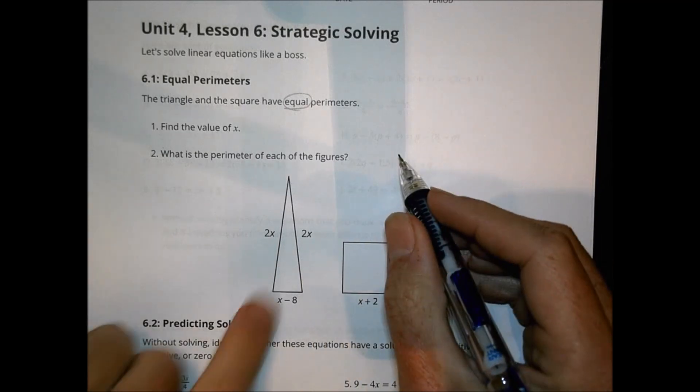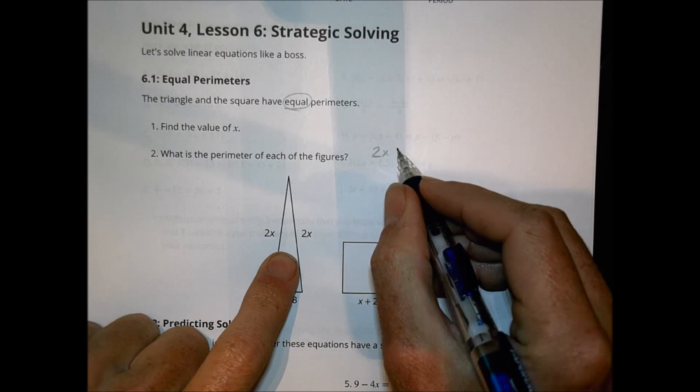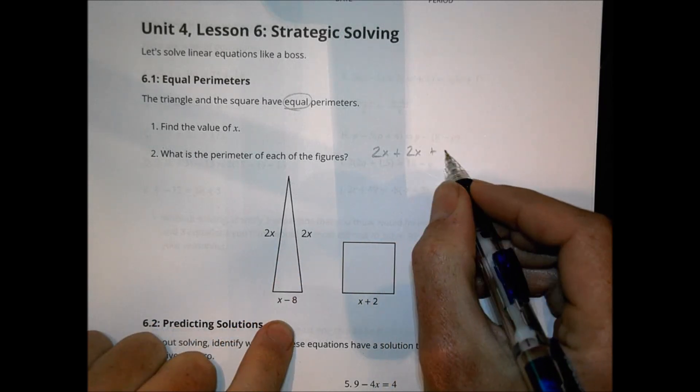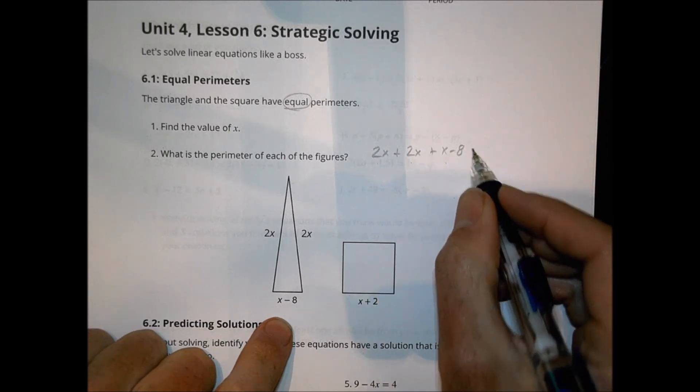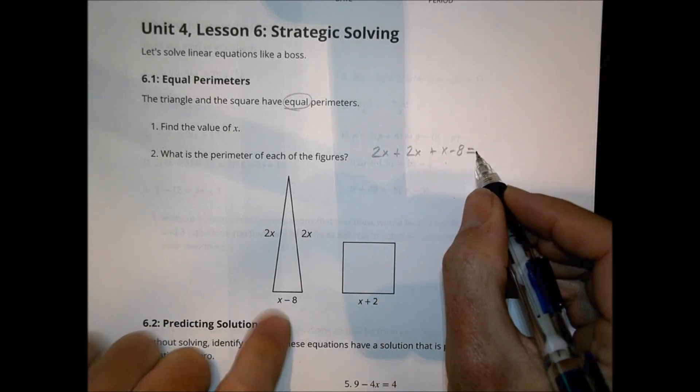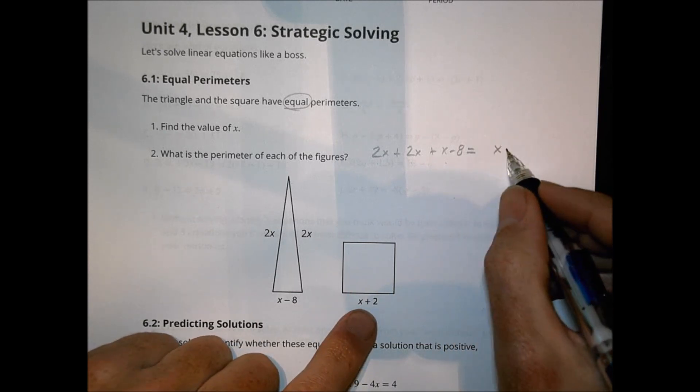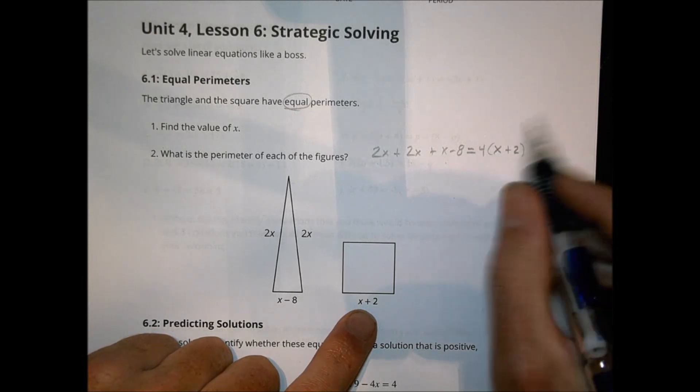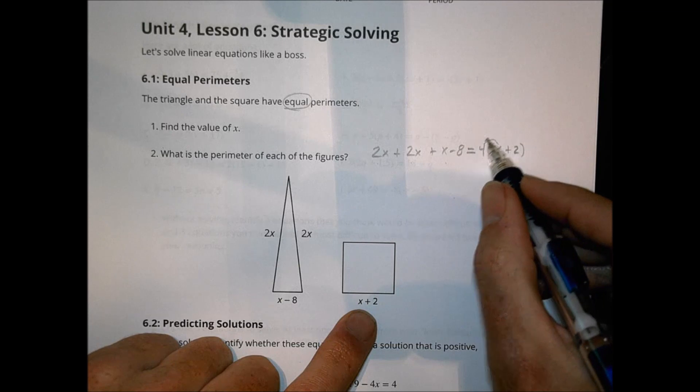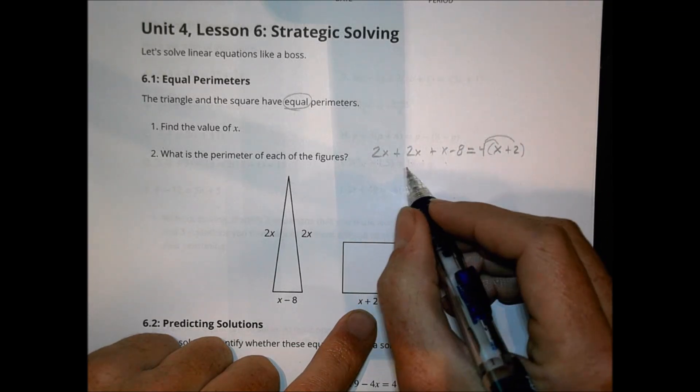So to do this here, I'm going to first of all take a look at the triangle, which has a perimeter of 2x plus another 2x plus x minus 8. So that's going to be the sum of all three sides. That then is going to be equal to the perimeter of the square. They only gave us one side of the square, which is x plus 2, but we know that a square has four equal sides, so we could put four on the outside, and then we can proceed to distribute that.